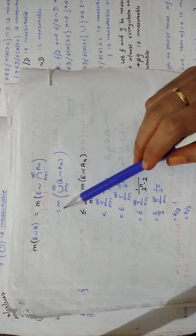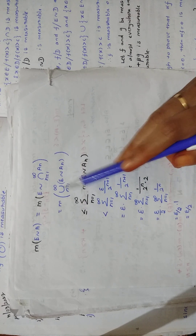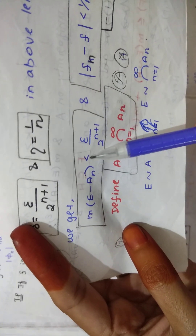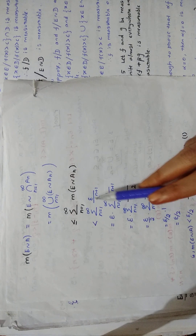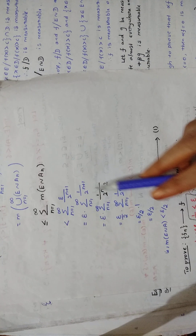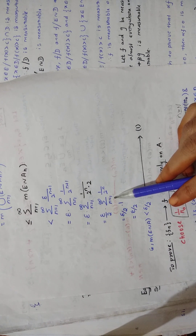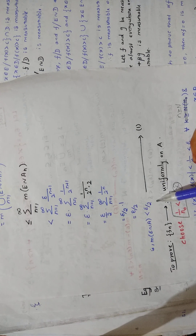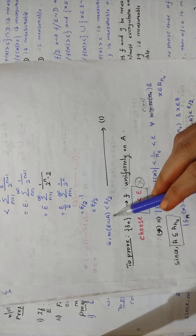By a property, when you bring the union to the outside, it becomes less than or equal to a summation from n equal to 1 to infinity. Union becomes summation. Now in the place of M(E \ A_n) we have a value, so just substitute it. That is why the inequality becomes strict less than. Bringing epsilon outside gives the summation. Splitting 2^(n+1) and bringing terms to one side, since summation from n=1 to infinity of 1/2^n equals 1, you get epsilon by 2 times 1, giving M(E \ A) less than epsilon by 2.